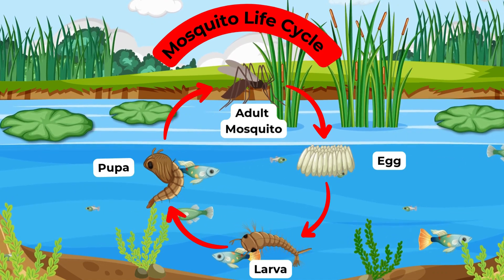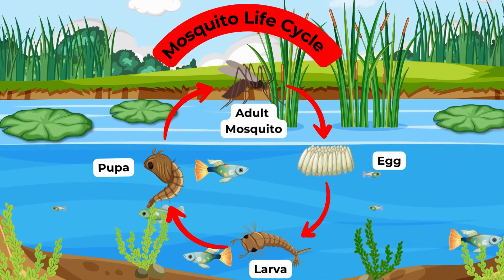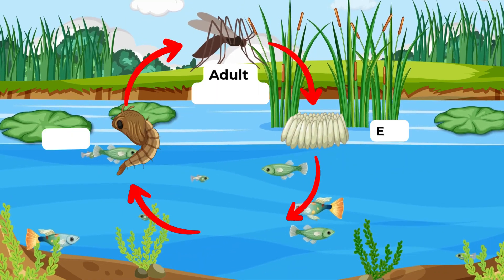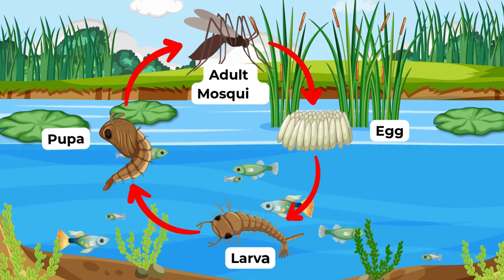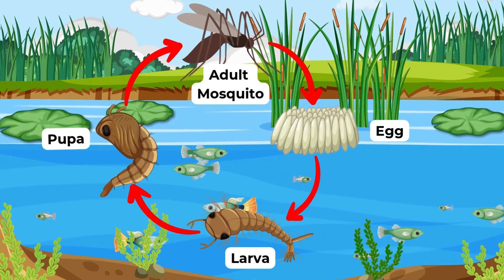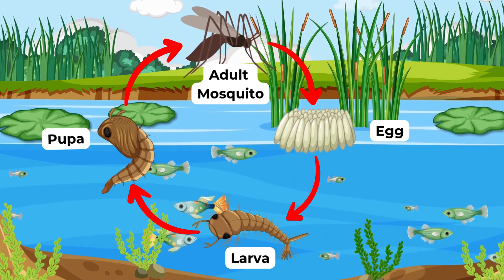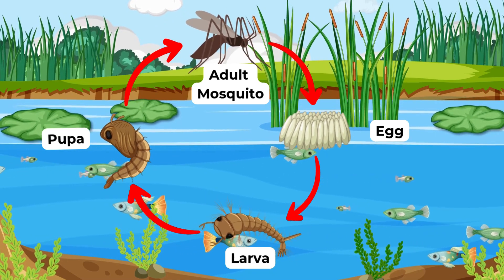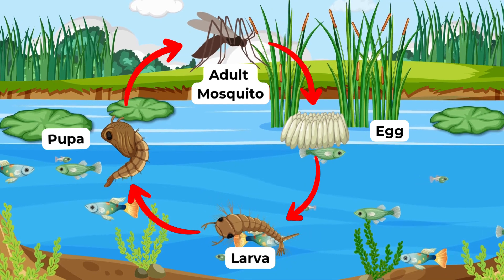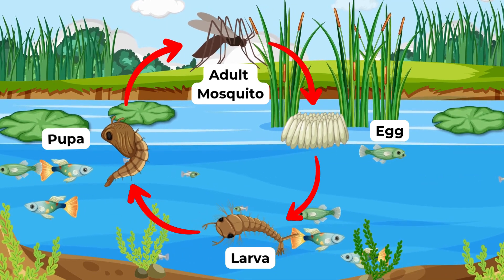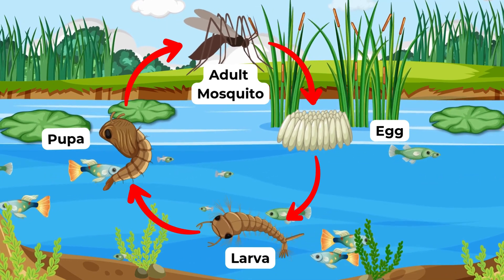Finally, they become adult mosquitoes and fly away, ready to start the cycle all over again. Isn't it amazing how much change a mosquito goes through in its life? Even though they can be pesky, their life cycle is a wonderful example of nature's magic.